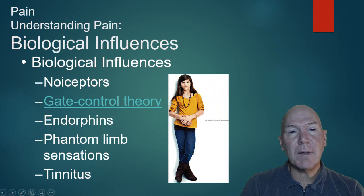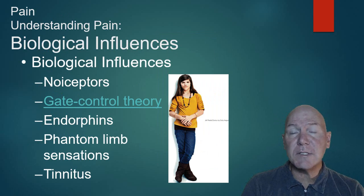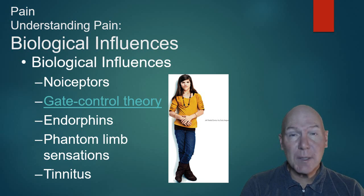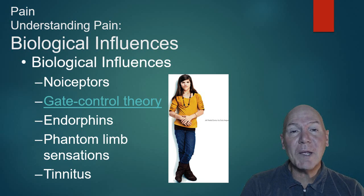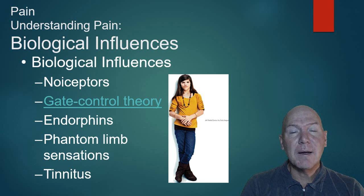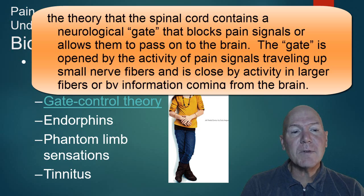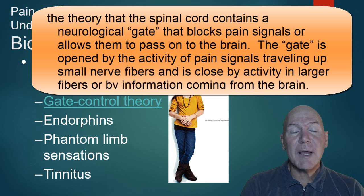Pain is something we want to understand because it is biological, psychological, and has social influences as well. We have nociceptors in our skin that pick up signals and tell our brain to release substance P, our pain neurotransmitter. Gate control theory states that because nerves traveling into your spinal cord go from a small fiber to a large fiber, there is a gate that we can control — pain signals must pass that gate for you to feel pain.